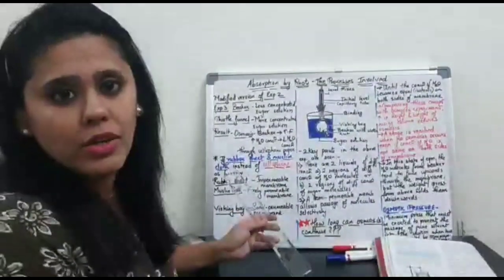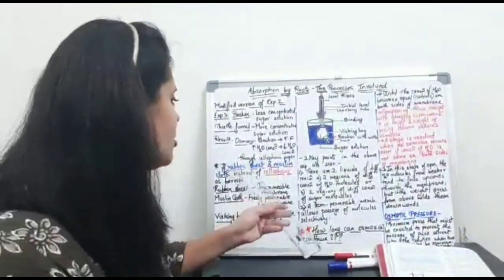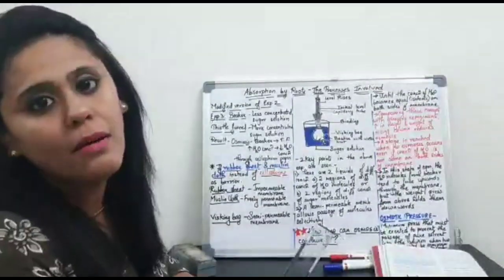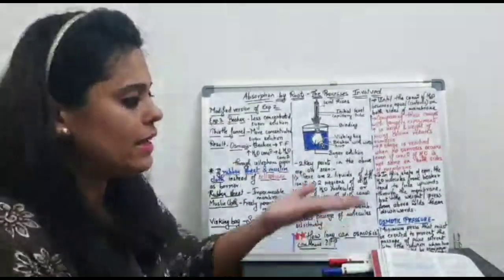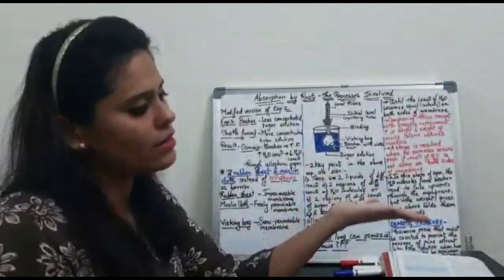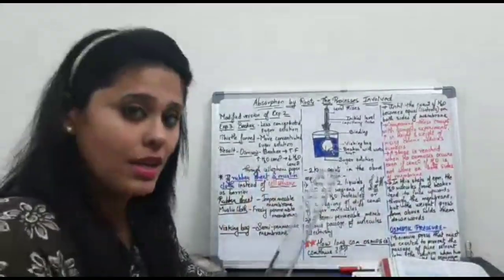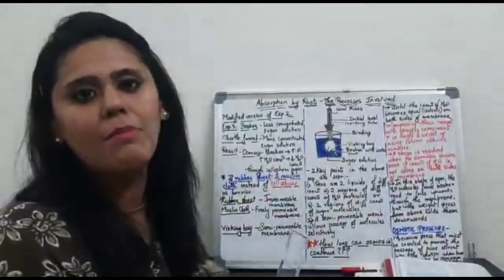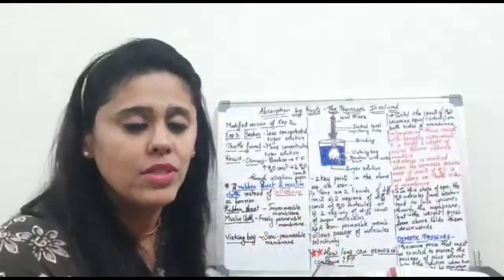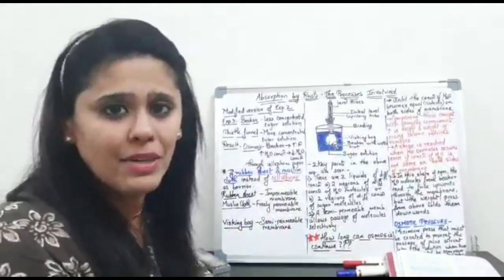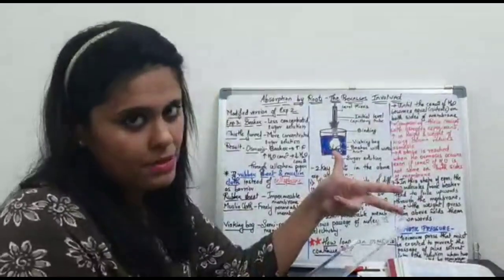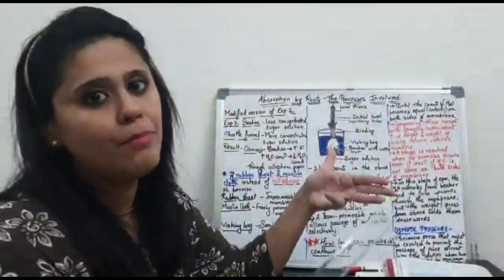Now, one more condition is introduced: what if we use a rubber sheet or muslin cloth instead of the cellophane membrane as the barrier on the mouth of the thistle funnel? We need to understand the difference between four types of membranes: impermeable, semi-permeable, freely permeable, and selectively semi-permeable.